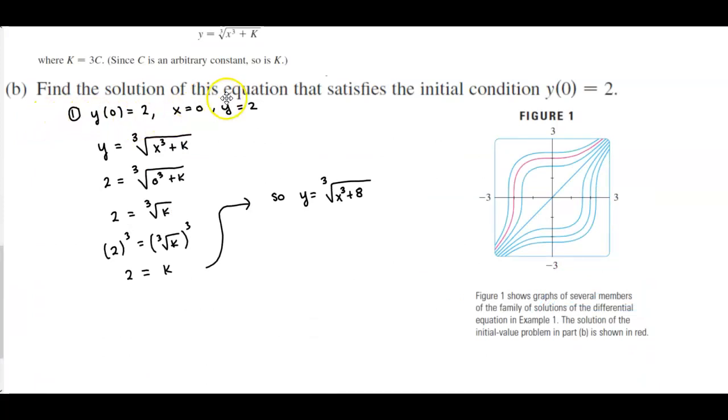For part (b), to find a solution of this equation that satisfies the initial condition y(0) equals 2, we let x equal 0 and y equal 2 and plug it into the solution from part (a). So 2 equals the cube root of k. We cube both sides, so k equals 8.